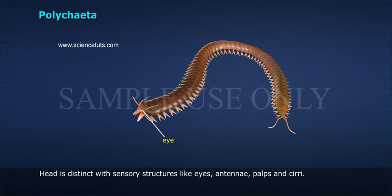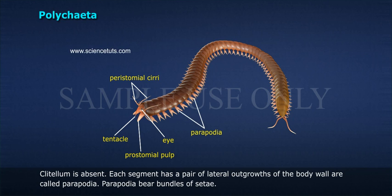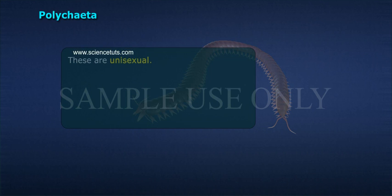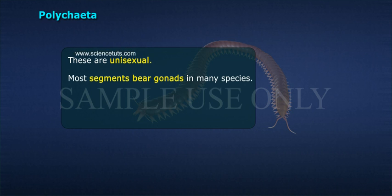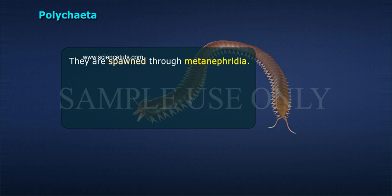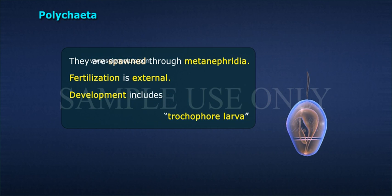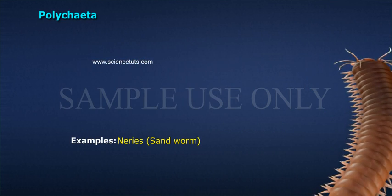In Polychaeta, the head bears sensory structures like eyes, antennae, palps, and cirri. The clitellum is absent. Each segment has a pair of lateral outgrowths of the body wall called parapodia, which bear bundles of setae. They are unisexual; most segments bear gonads. In many species, gonoducts are absent — gametes are shed into seawater and spawned through metanephridia. Fertilization is external and development includes a trochophore larva. Examples include Nereis (sandworm).